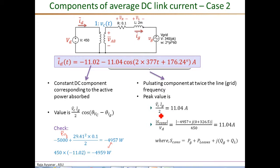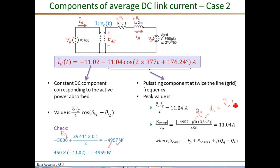Looking at the pulsating current component, its peak value is one-half times VC_peak times IG_peak — this is just the amplitude of a sinusoidal signal, so we don't see a negative sign here. From the power method, the peak value of the pulsating component is the magnitude of the complex power processed by the converter divided by V_D. The active power component is the same as calculated before (negative), the reactive power QG is zero due to unity power factor, and the reactive term QL equals VL_peak times IG_peak over 2, which also matches what we calculated before.